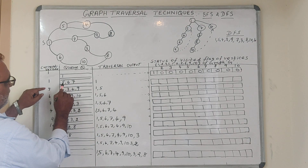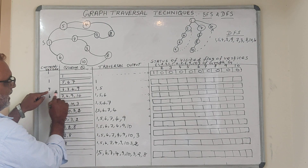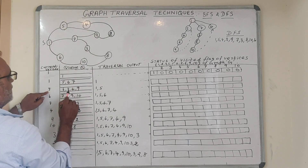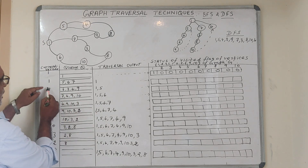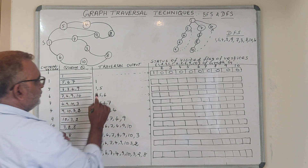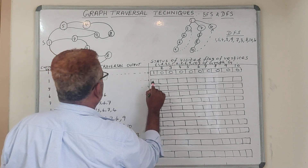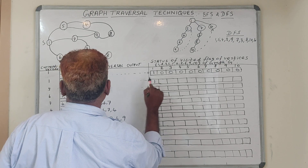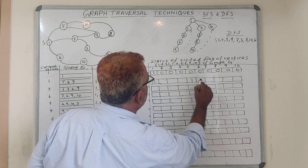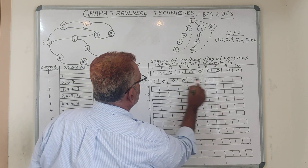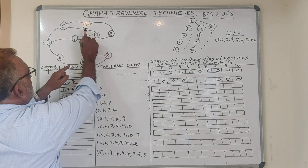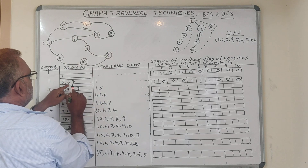The next current vertex is 5. Under 5 there are 2 other vertices: 4 and 9, which are included in the queue. Now 5 is dequeued and included in the traversal output. So the output so far is 1, then 5, 6, 7. The status flag shows 5 is visited (value 1), 6 is visited (value 1), and the remaining values are 0. Vertices 4 and 9 are newly added.